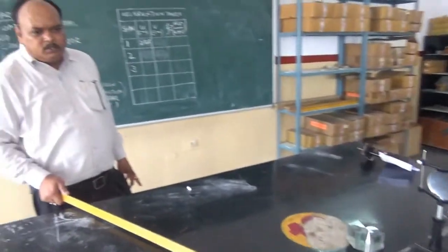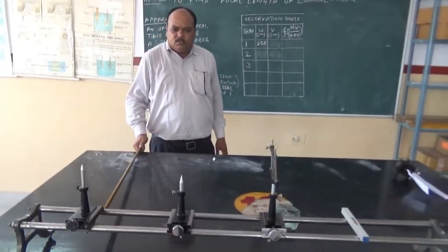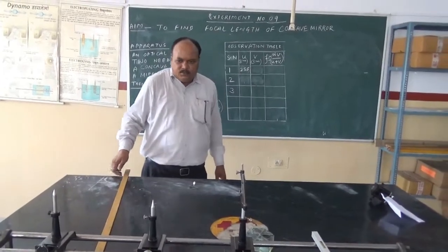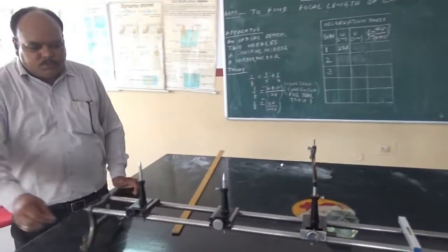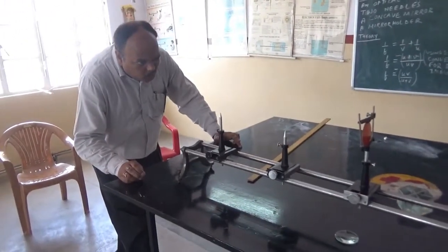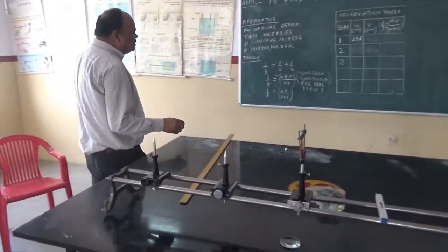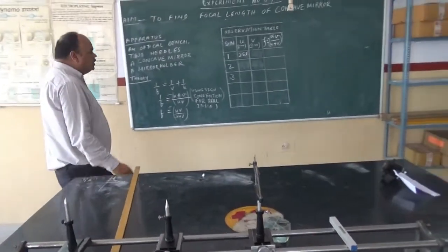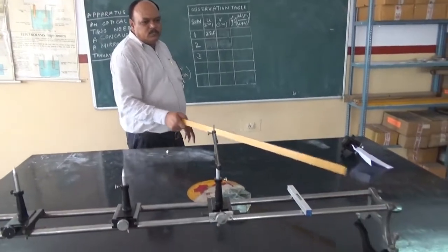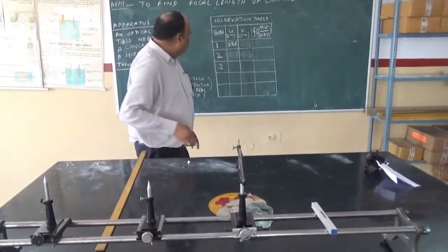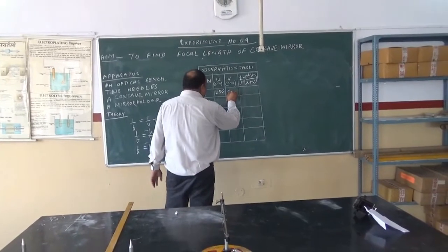We get the position of the image at 50.2 centimeter. In this experiment, we have kept the concave mirror at 40 centimeter from the left hand side. The image position is 50.2 centimeter.